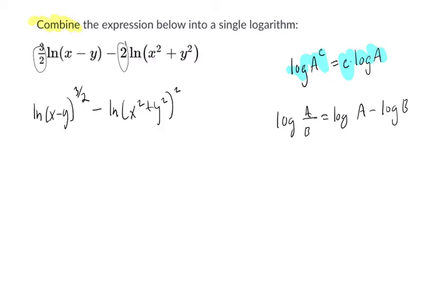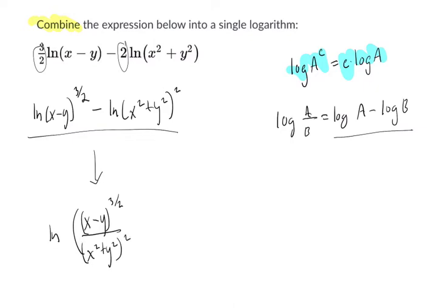So there's actually nothing we can do with this or this. However, we can apply this reasoning to this whole term right here, and that's going to get us the natural log of x minus y to the 3 halves over x squared plus y squared squared.